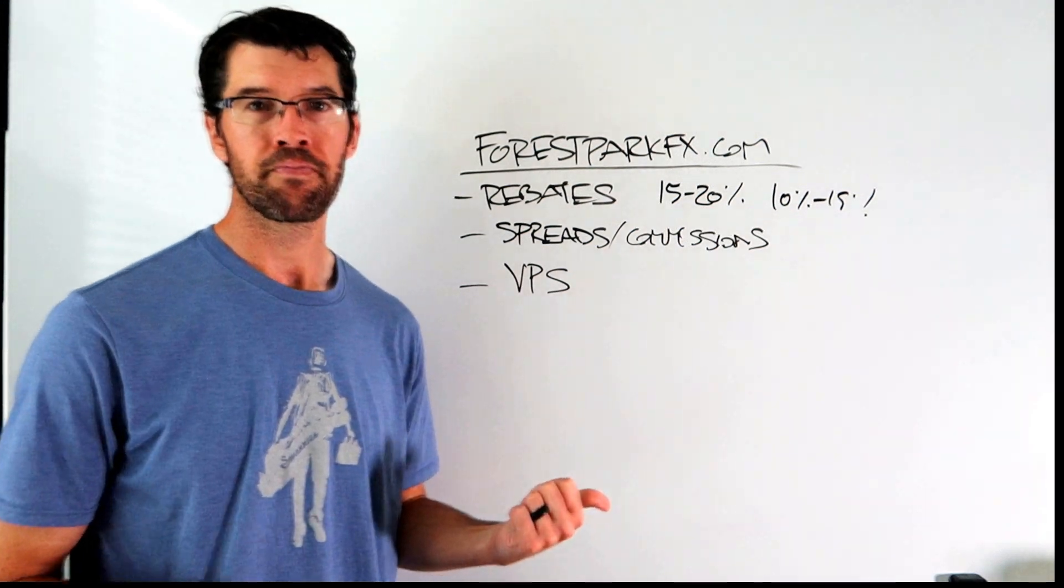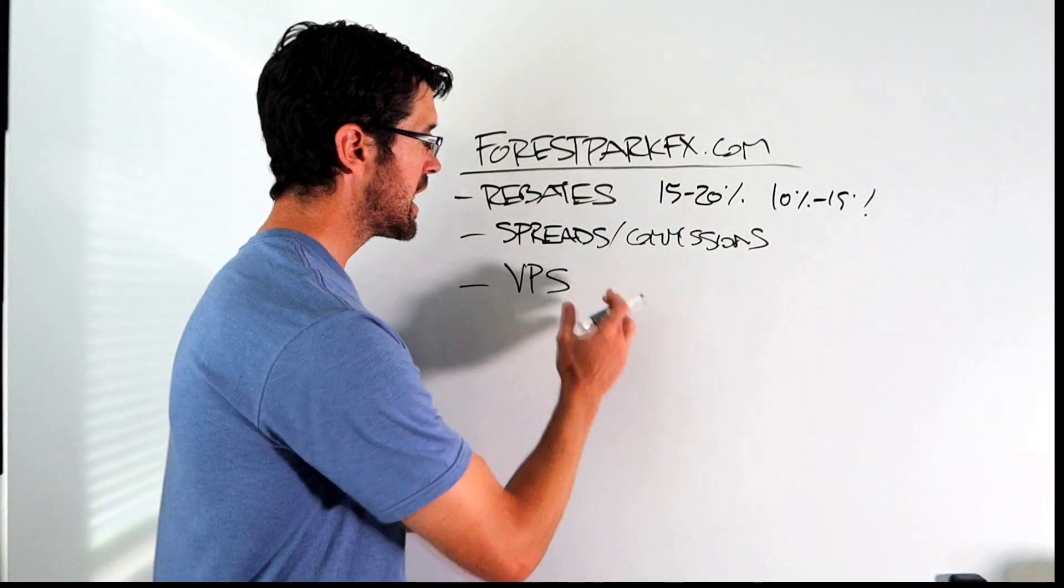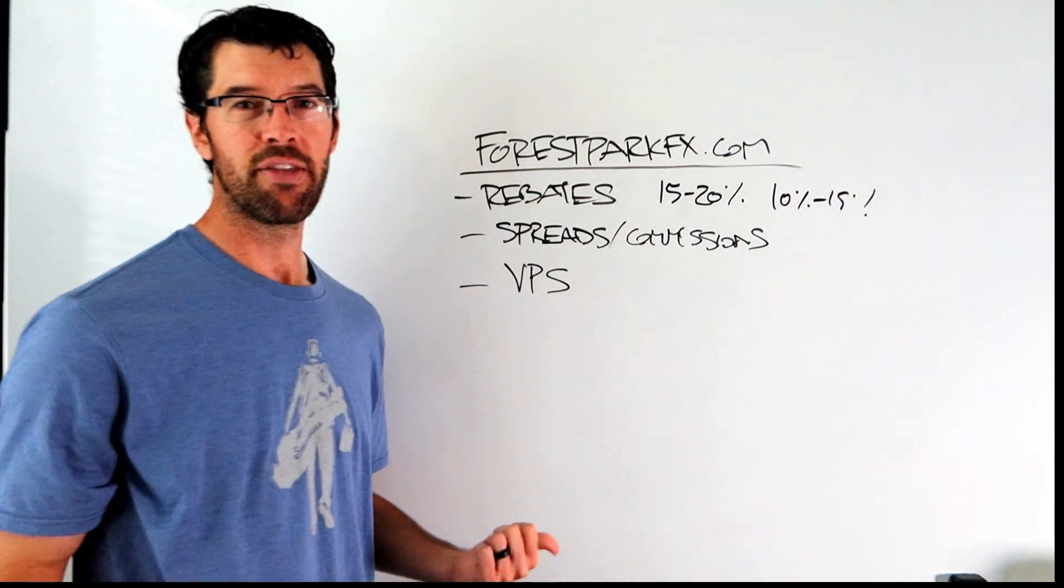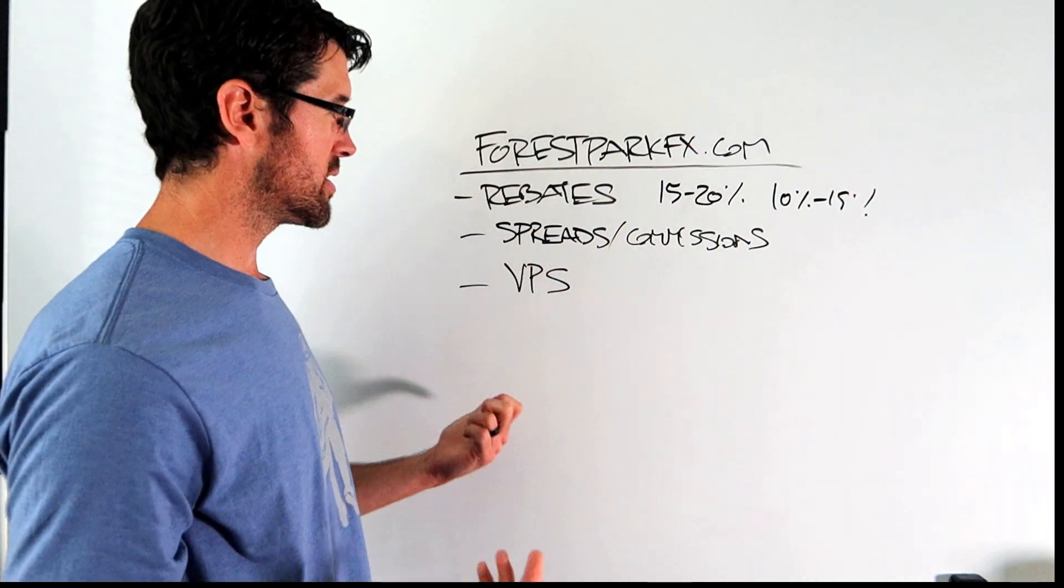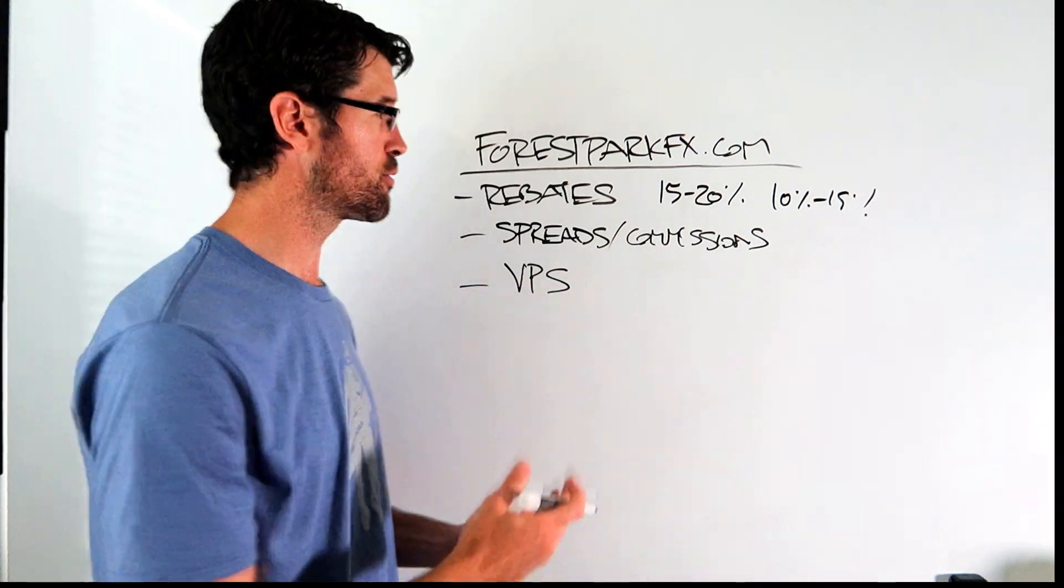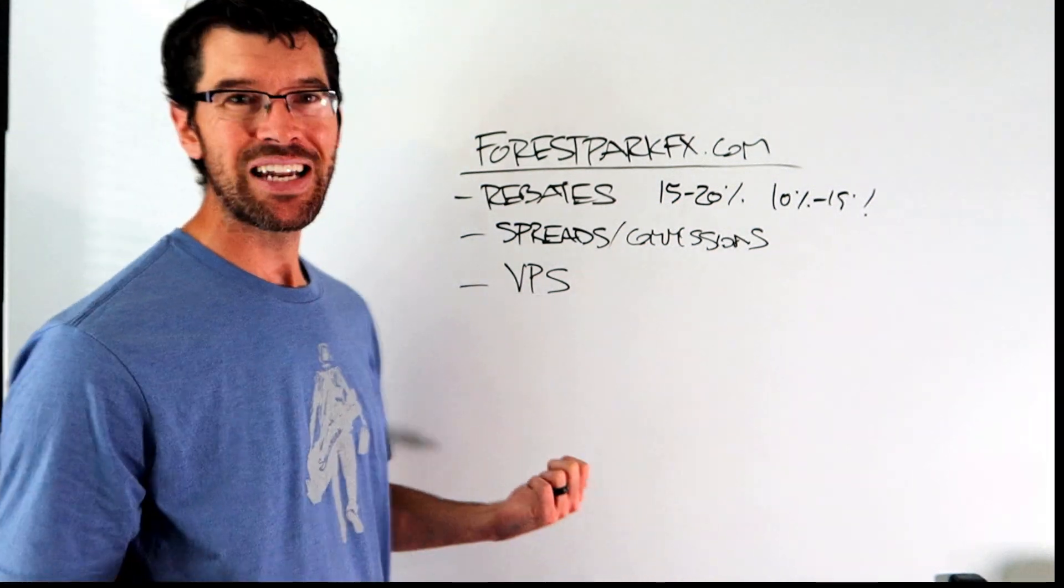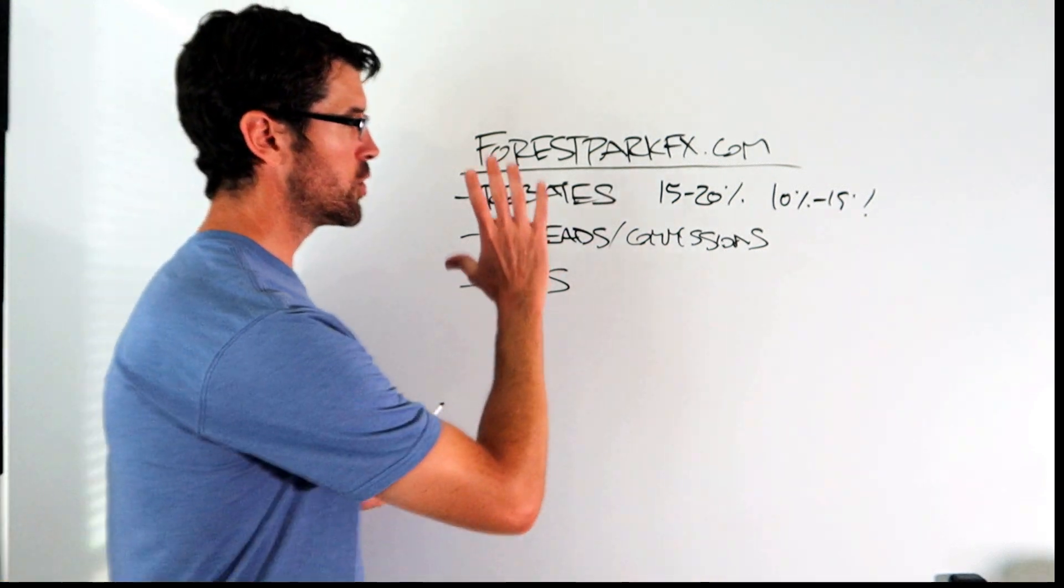One thing I also use and take full advantage of is a VPS service. Certain brokers will sponsor a VPS or virtual private server allowing you to trade automated strategies without having to pay the extra 50 or 100 bucks a month to manage that VPS service. Certain brokers do it. I have one that I run basically four to five accounts on it, so I can have several instances of my MetaTrader running for my automated strategies with no disruption.